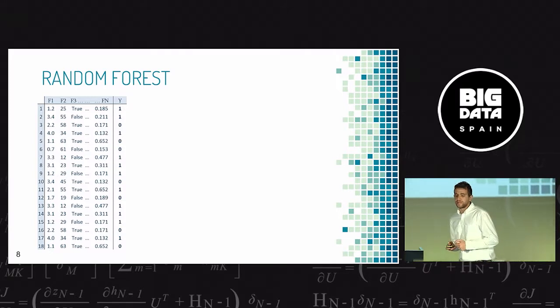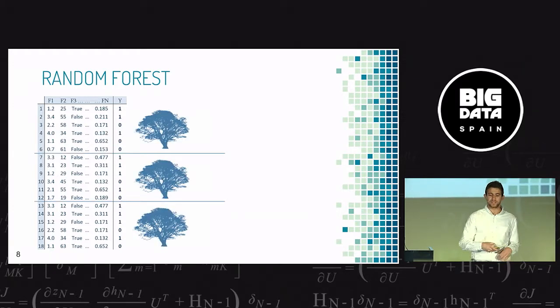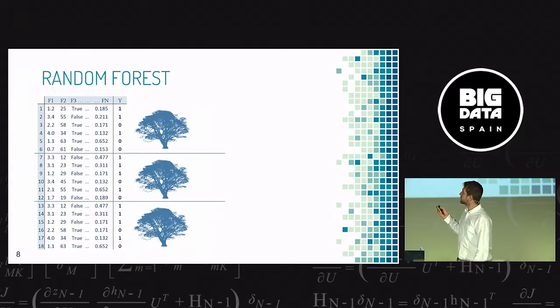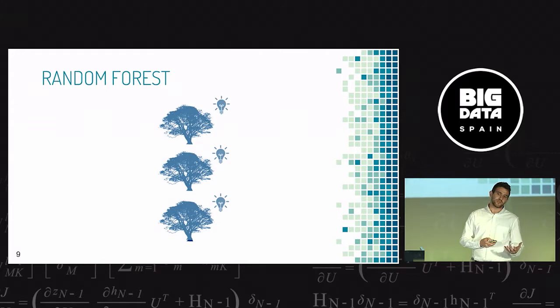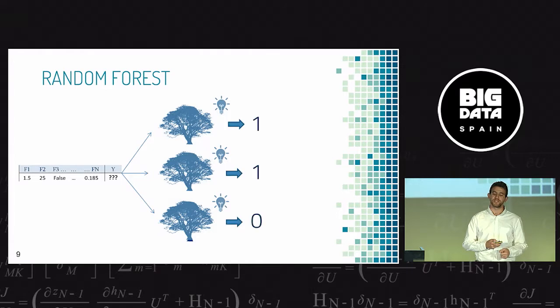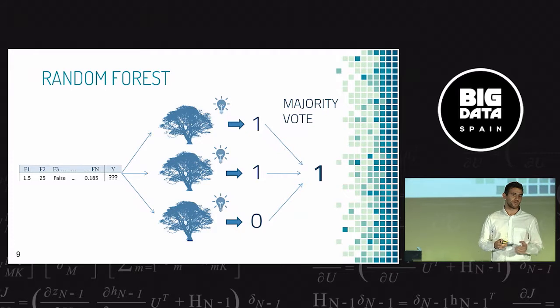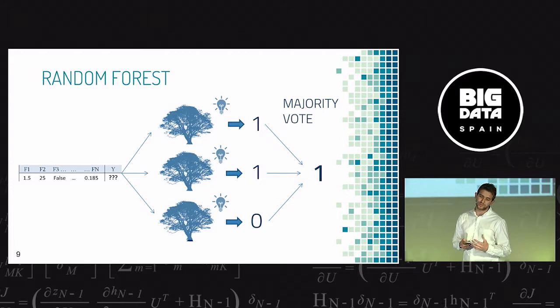Very quick, how random forest works. Imagine we have a dataset. Random forest divides the dataset in small pieces, for example in three pieces, and traces a tree in each piece. We obtain three smart trees that are able to predict a new data point. When a new point appears, you ask the trees, each one makes its prediction. After, you apply the majority vote to determine which is the final output of random forest.